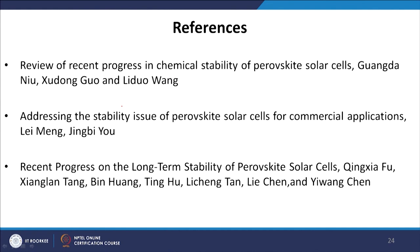For reference, there are many research papers and review papers available in the literature. Some of them include: 'Review of Recent Progress in Chemical Stability of Perovskite Solar Cells' by Lido Wang; 'Addressing the Stability Issue of Perovskite Solar Cells for Commercial Applications' by Zing Bo; and 'Recent Progress on the Long-Term Stability of Perovskite Solar Cells' by Yung Chen. There are many excellent research articles and review papers available online covering basic introduction to in-depth discussion about stability issues in perovskite solar cells. Thank you very much.